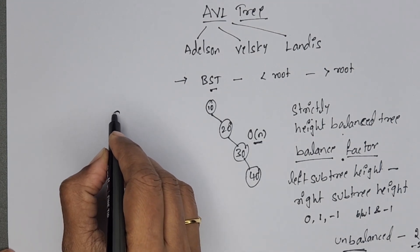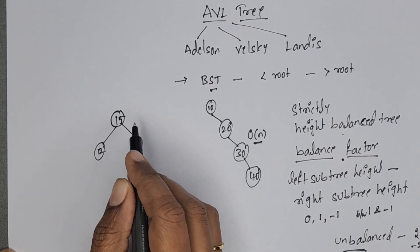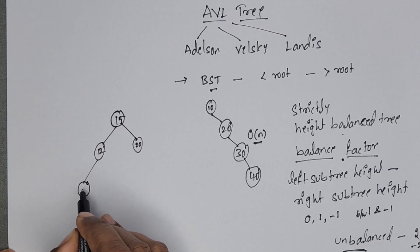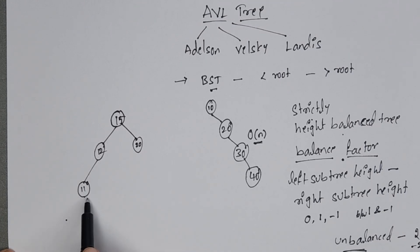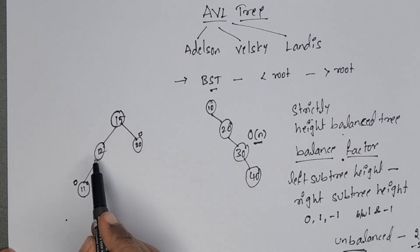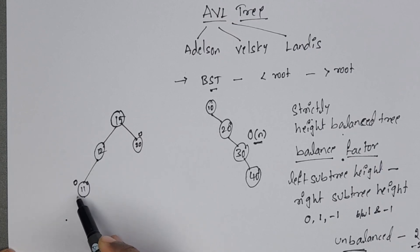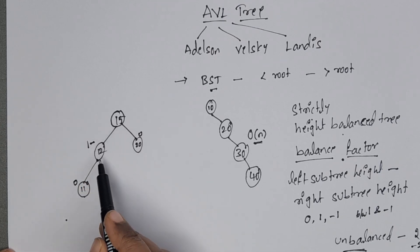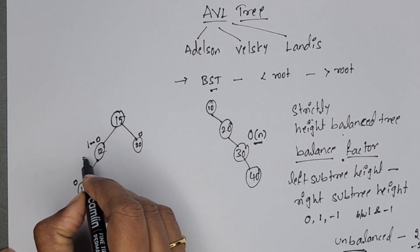Let's take an example. For node 11, there is no left subtree and no right subtree, so the balance factor is 0. For node 20 also, no left subtree and no right subtree, balance factor is 0. For node 12, the left subtree height is 1 — height means number of edges from node to leaf node in the longest path. There is no right subtree, so 1 minus 0 equals 1.